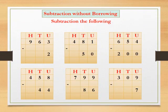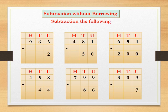Subtract the following sums in your notebook. 963 minus 2, 481 minus 50, 654 minus 200, 458 minus 44, 799 minus 86, 309 minus 7.